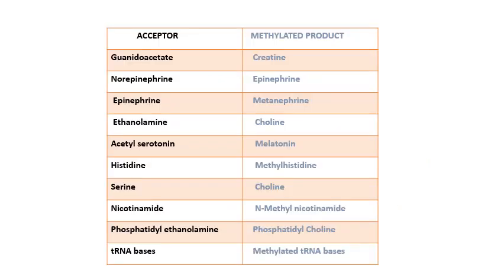There are many examples of transmethylation reactions. You are supposed to write them as equations with SAM going to SAH. Examples include: guanidoacetate to creatine; norepinephrine to epinephrine; epinephrine to metanephrine; ethanolamine to choline — and so on. All these are examples of the transmethylation reaction.